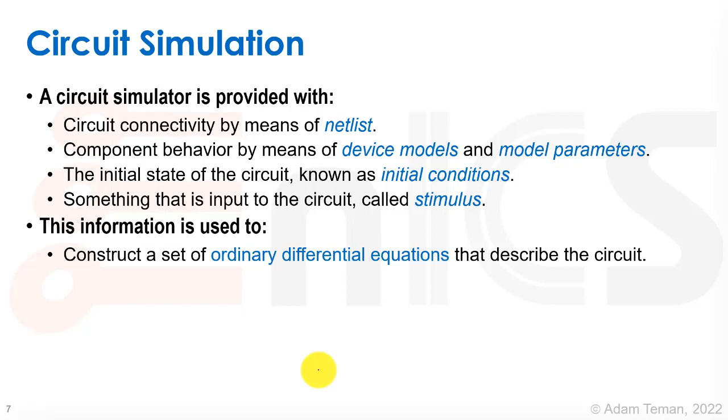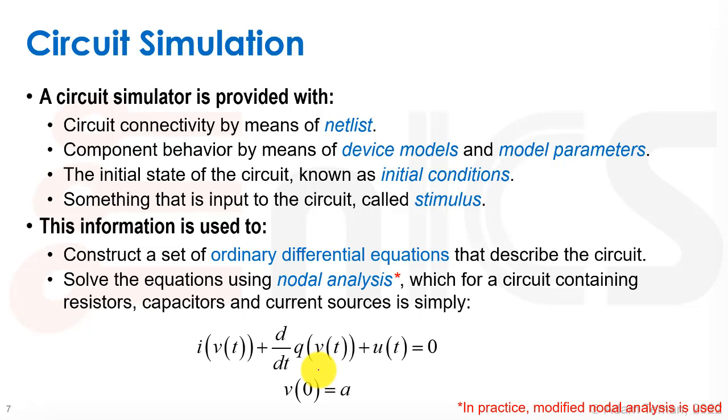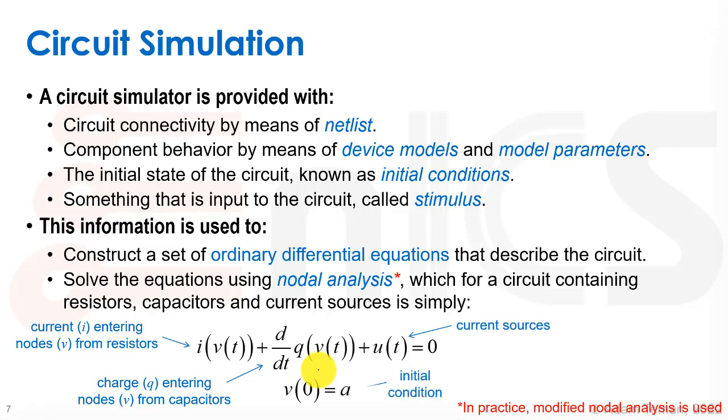Now when we have all of that as the input to our simulation, we use this information to construct a set of ordinary differential equations that describe the circuit. And what we need to do is we need to solve the equations, and we do that using nodal analysis, or actually in practice we use modified nodal analysis, which we'll discuss in a little bit, which for a circuit containing resistors, capacitors, and current sources is simply what we see here. I of V(t) plus d/dt of Q of V(t) plus U of t will equal 0 with the initial condition that V of 0 equals A. And what are we talking about over here? That I of V(t) is the current I entering nodes V from resistors. The d/dt of Q of V(t) is the charge that's entering nodes from capacitors. And the U of t are the current sources that are adding current to the circuit. And as I said before, V of 0 is the initial condition of the circuit.